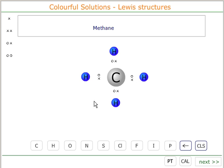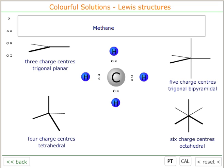This gives the carbon a full octet of eight electrons. There are four regions of negative charge density. Four regions of negative charge density adopt a tetrahedral shape.